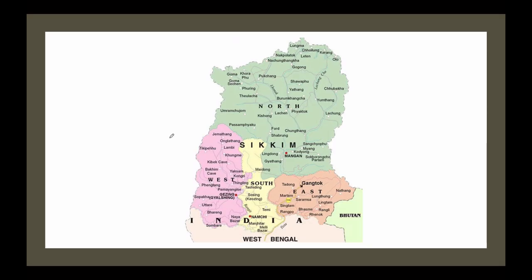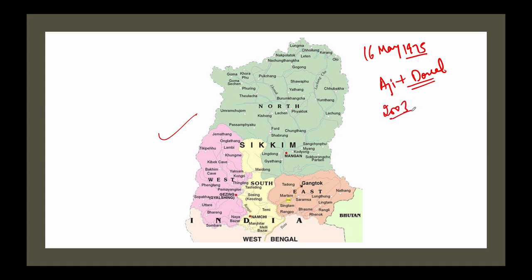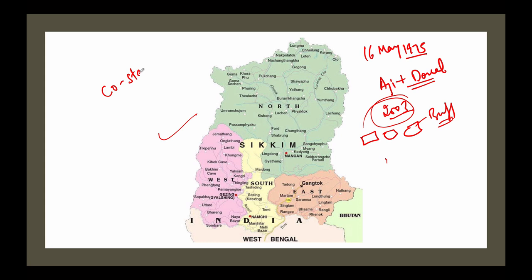On 16 May 1975, Sikkim became part of India. NSA Ajit Doval had played a prominent role in Sikkim's merger with India. In 2003, China acknowledged Sikkim as a part of India — earlier there had been a verbal understanding that Nepal, Bhutan, and Sikkim would act as buffer states between India and China. Sikkim is the only state with the status of a 'co-state' in India, and it is also the least populous state in India.